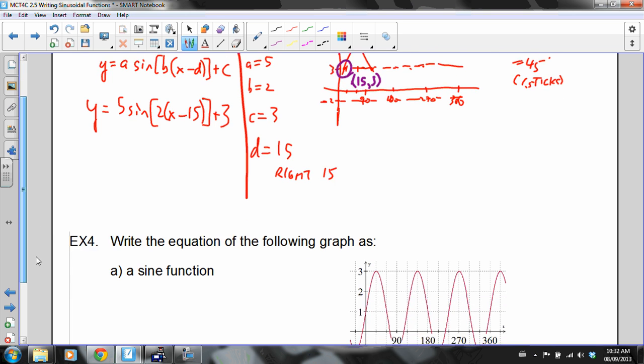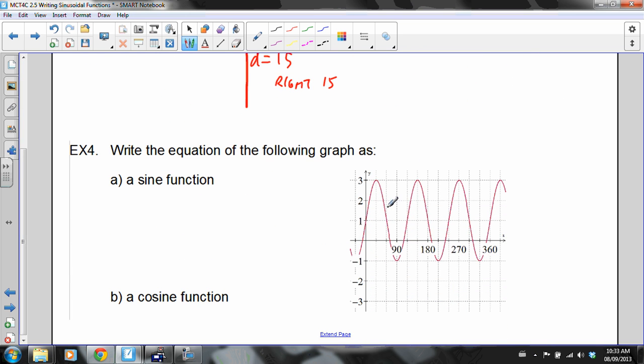Example four, same sort of thing, except that we're given a graph. So sign function, I'm going to write the general form. And then we're just going to start picking this stuff off the graph. A equals... See, what I like doing is I like sketching in the axis, and see where the axis happens halfway between the minimum and maximum. So I'm going to draw that in there, just so I can see it. A is from the axis to the maximum. That's 2 units. Right? The amplitude is 2.